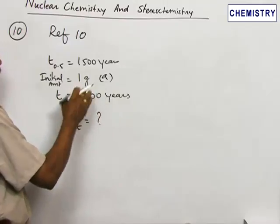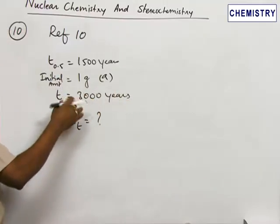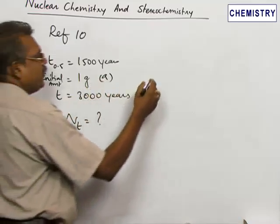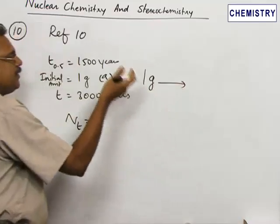So we have to find out after 3000 years how much is left out. This problem can be easily solved by the fractional method. Since we start from 1 gram, from the half-life fractional method point of view if you analyze...